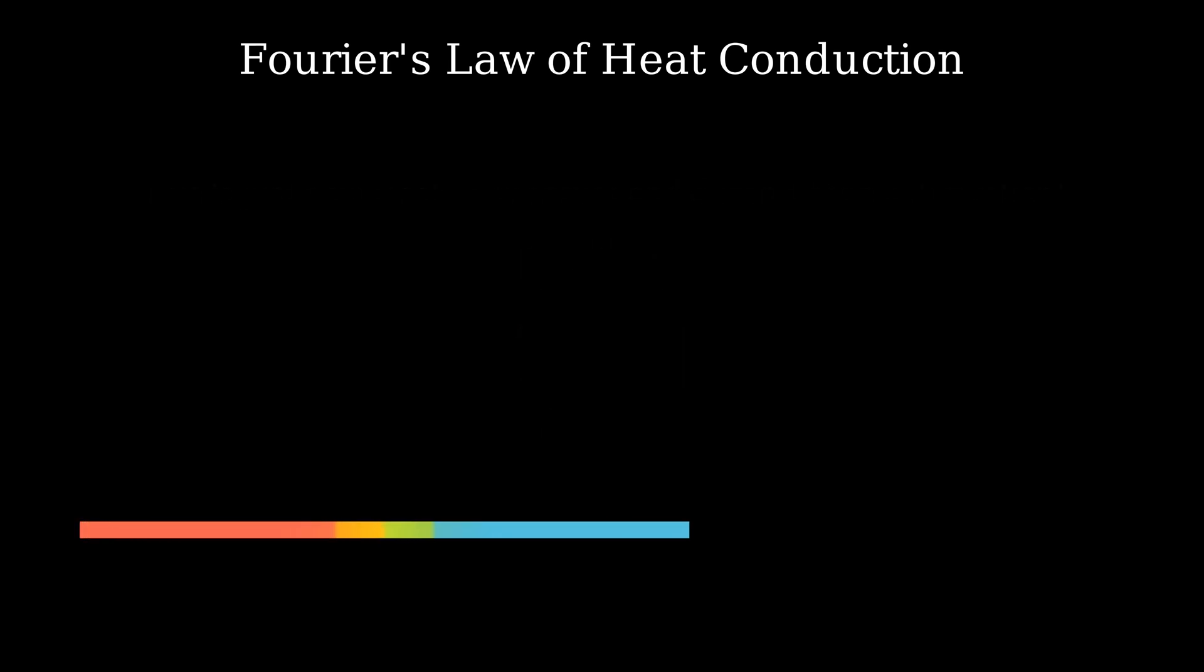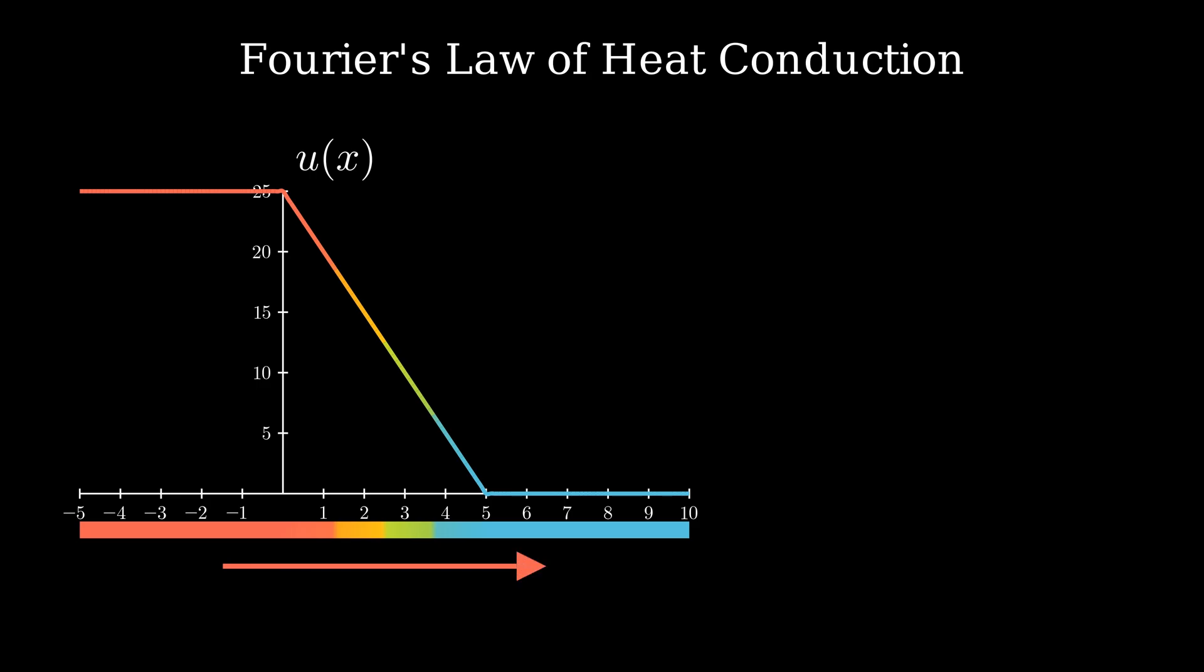Consider a metallic rod with one side heated to a temperature of say 25 degrees and the other side kept at 0 degrees with a linear transition temperature between the two sections. Heat always flows from hotter to the cooler section. So we'll see the flux between the point 0 and 5 from left to right.